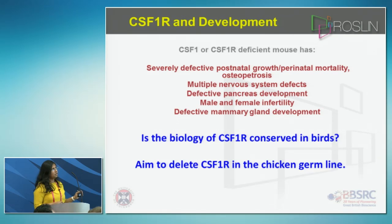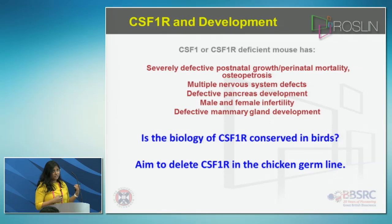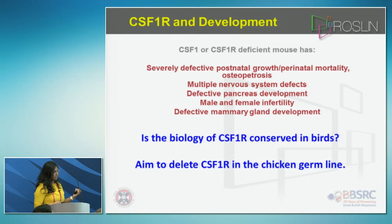In mouse, it has been detected that any mutation in the CSF1 and CSF1R loci is responsible for severe growth abnormality, loss of bone formation, difficulties in the development of reproductive organs, mammary glands, and several other defects. This is what has been known in mice, but we want to know whether the same biology of CSF1R is also observed in chickens. So the aim of this project is to delete the locus of CSF1R using CRISPRs in a chicken primordial germ cell line.